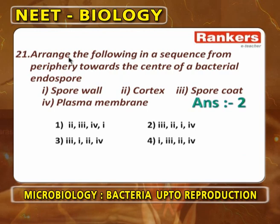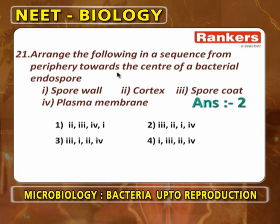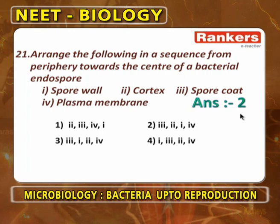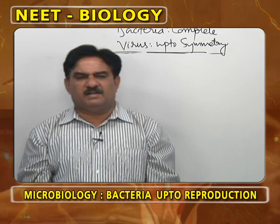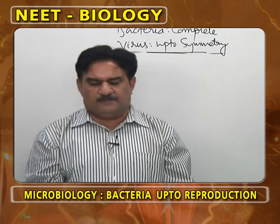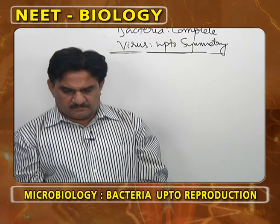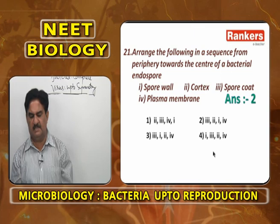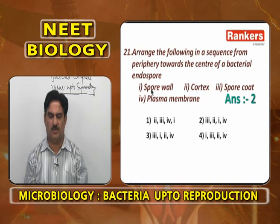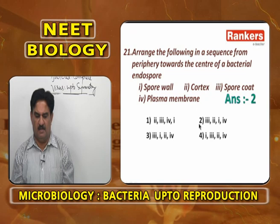Arrange the following from periphery towards the center of a bacterial endospore: The outermost layer is the spore coat, next is the cortex, then the spore wall, and finally the plasma membrane at the center. So the sequence from periphery to center is: spore coat, cortex, spore wall, plasma membrane — i.e., 3, 2, 1, 4.